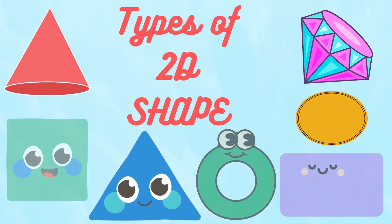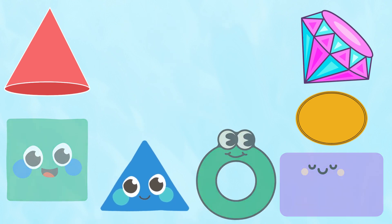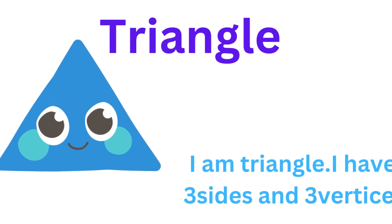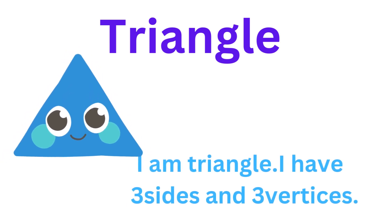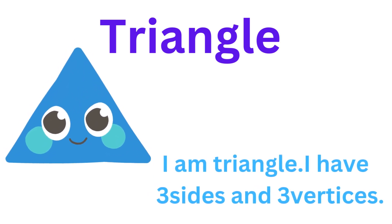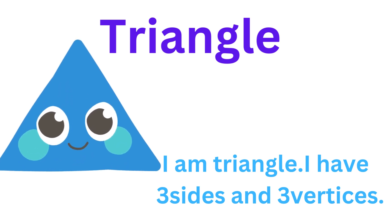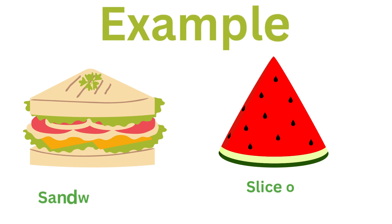Types of body shape. I am triangle. I have three sides and three vertex. Example: sandwich, slice of watermelon.